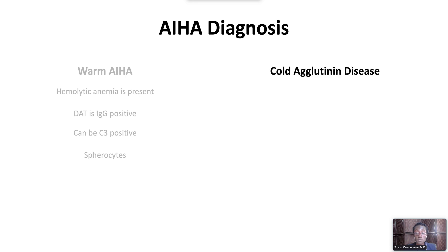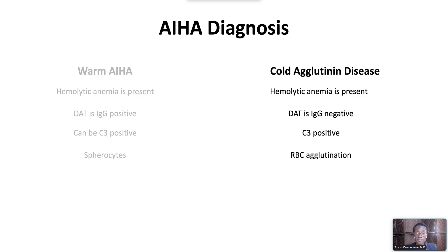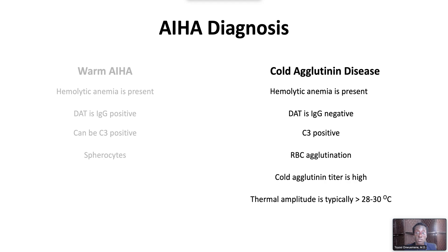In cold agglutinin disease, hemolytic anemia is also present. On the DAT, IgG is typically negative and C3 is positive. Occasionally, the DAT may be weakly positive if an IgG antibody is also present. The peripheral blood film typically demonstrates red blood cell agglutination. Clinically significant cold agglutinin antibodies have high cold agglutinin titers, and the thermal amplitude — the temperature at which the antibody is active — tends to be close to physiologic temperatures, typically greater than 28 to 30 degrees centigrade.